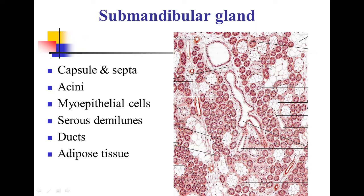In addition to the acini, there are ducts within the submandibular gland: striated ducts and intercalated ducts, the smallest duct. Within the lobule, you can see serous acini as well as mucous acini, surrounded by myoepithelial cells, serous demilune, striated ducts, and intercalated ducts. There are also a few adipose tissue cells in the parenchyma.